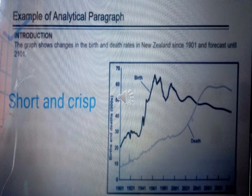Here you can see the birth rate starting from 1901 up to 2101. This will be our introduction: the graph shows changes in the birth and death rate in New Zealand since 1901 and forecast until 2101. Remember that your introduction should be very short and crisp.